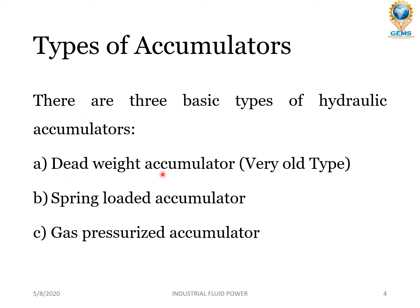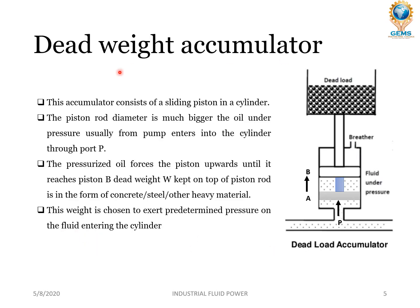There are three basic types of hydraulic accumulators. The first one is the dead weight accumulator, which is a very old type. The second one is the spring loaded accumulator and the third one is the gas pressurized accumulator. Let's see how the dead weight accumulator works. This accumulator consists of a sliding piston in a cylinder.